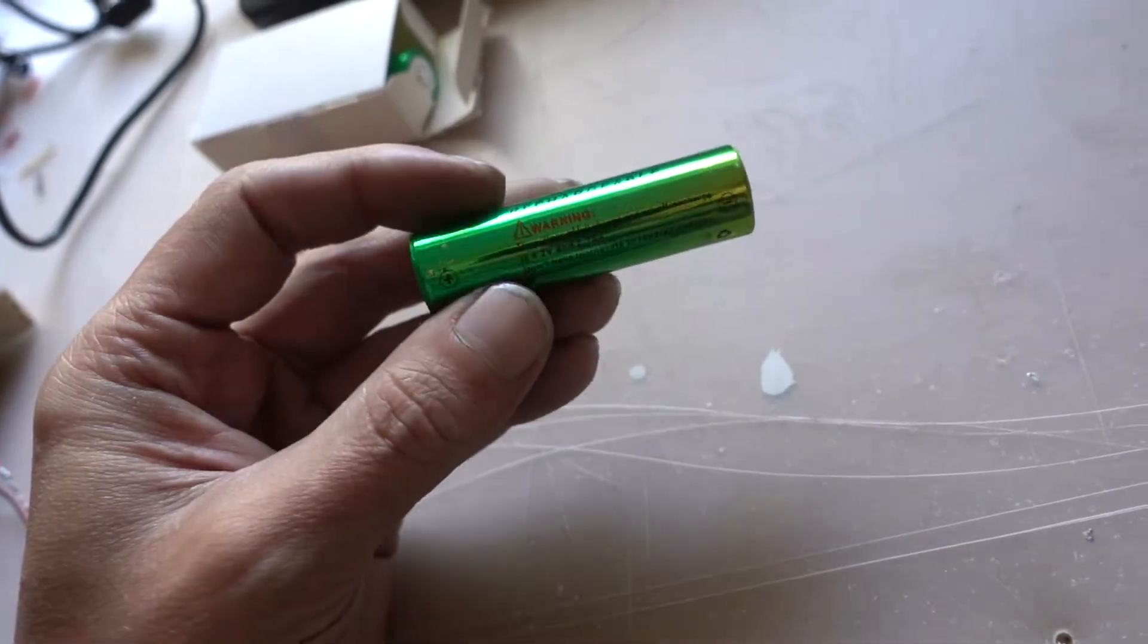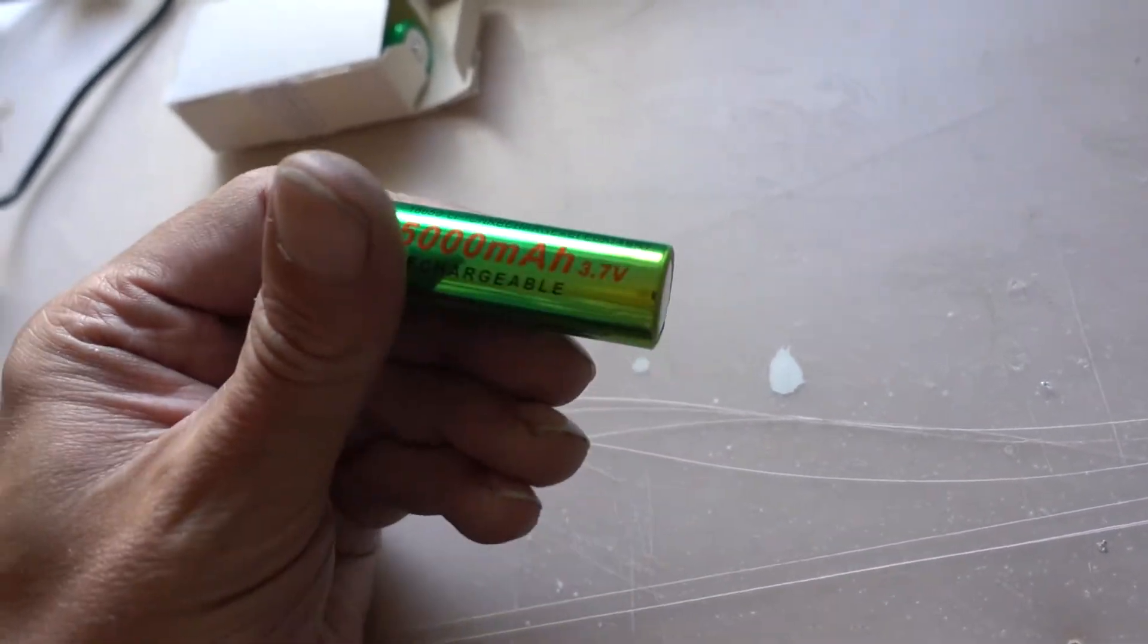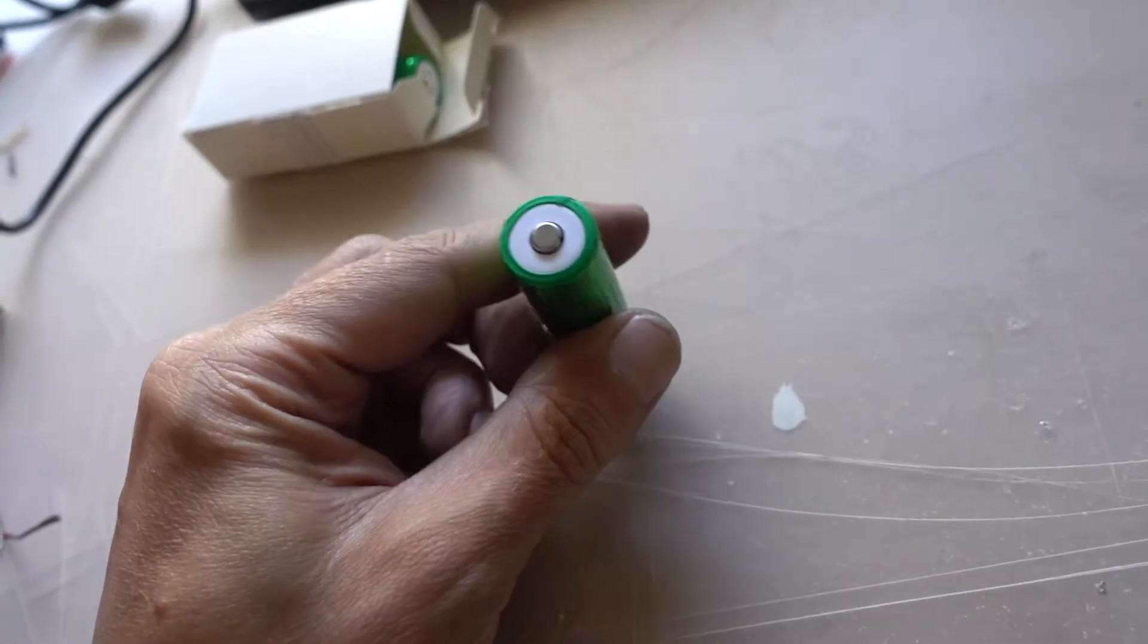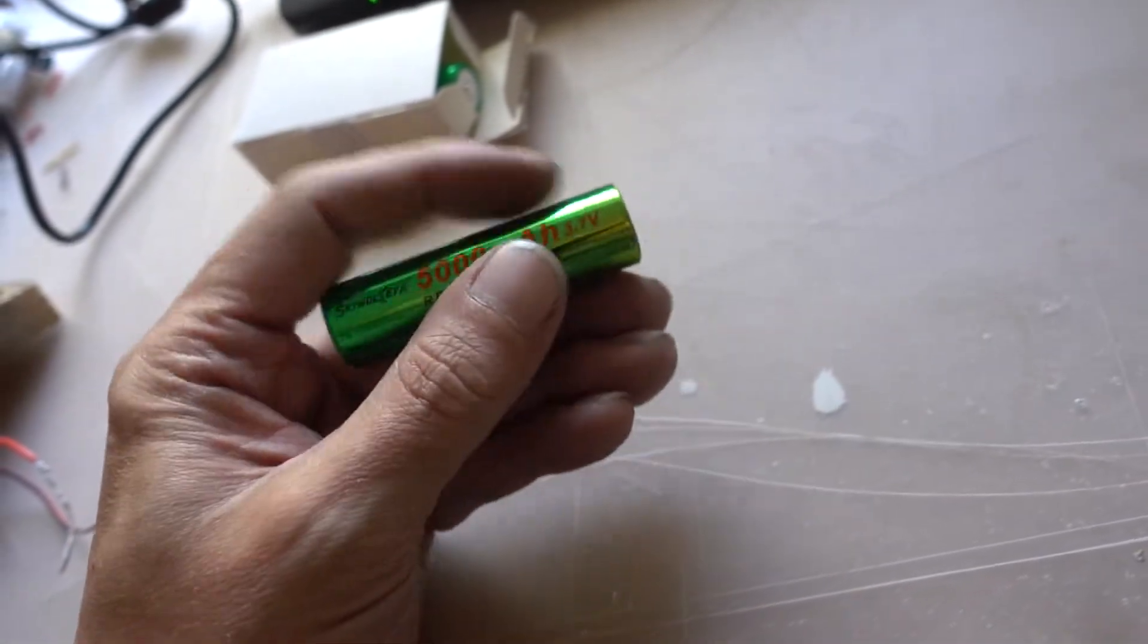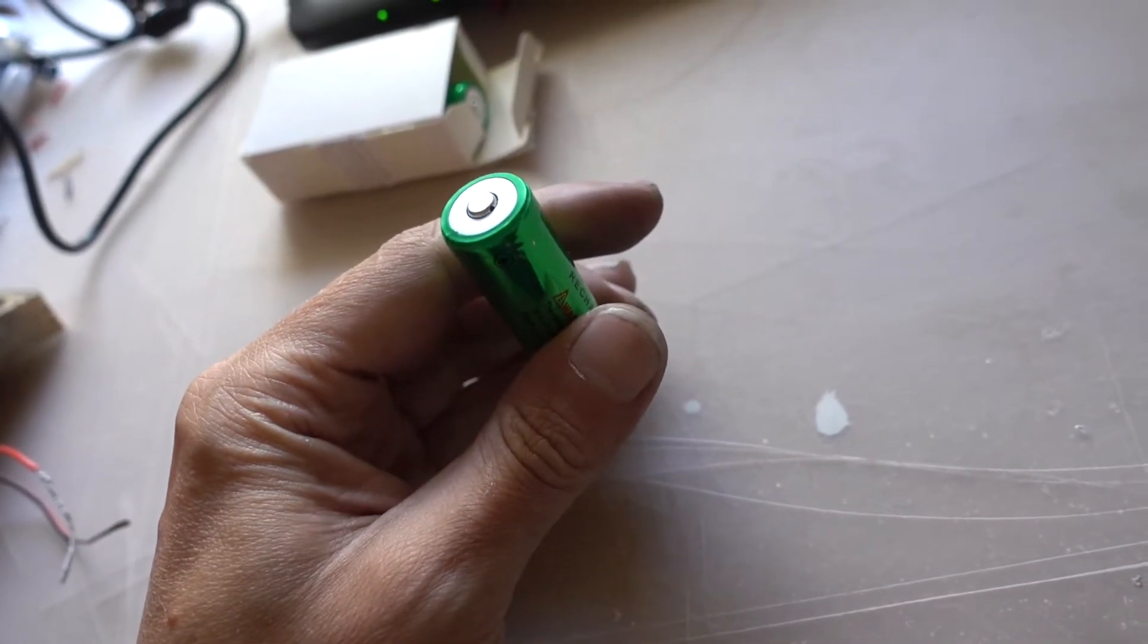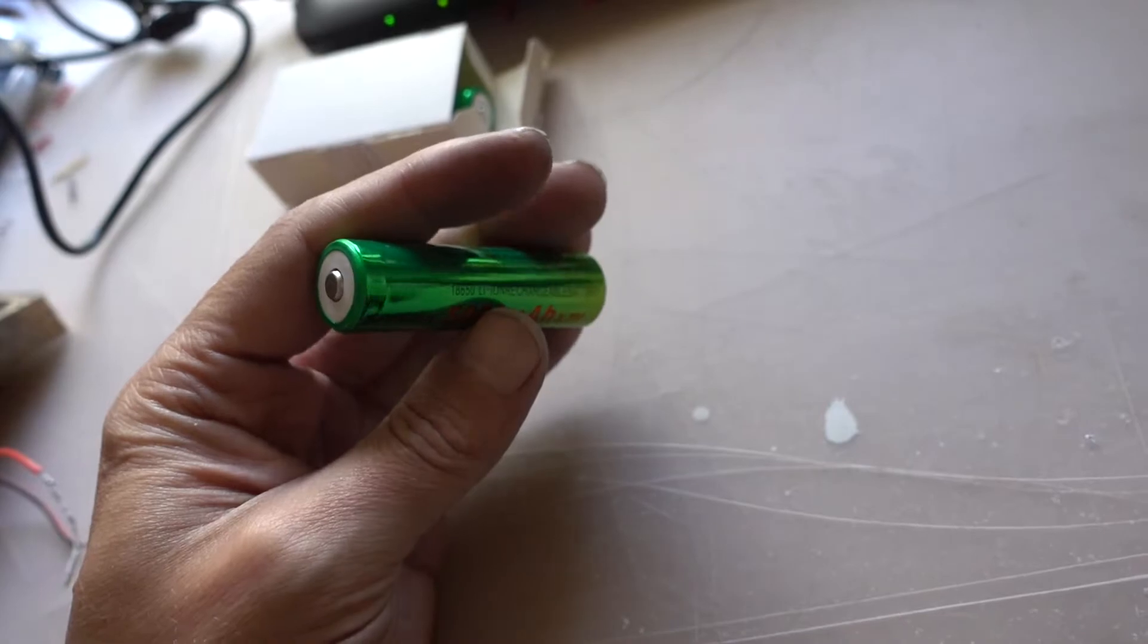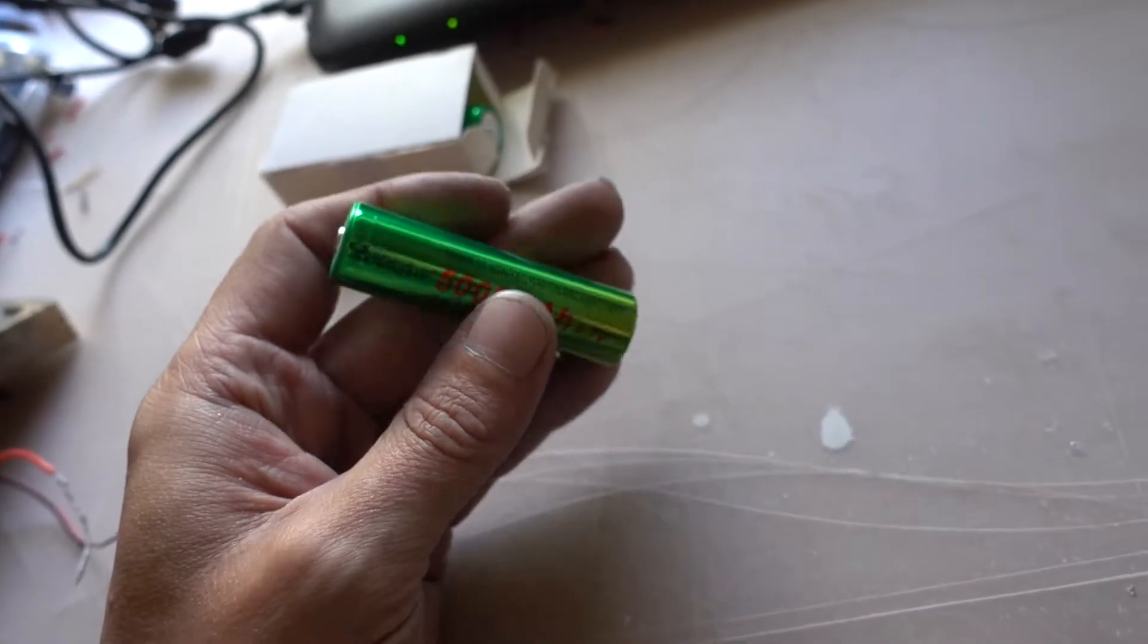So yeah, one of the cheapest stuff I could get on Amazon. But they seem to be okay, other than the 5000, that's total bullshit. But they were something like $2.60 each or so.